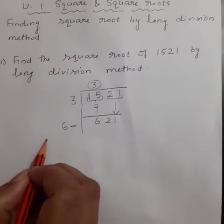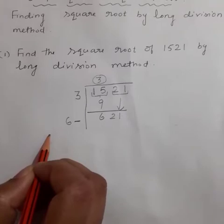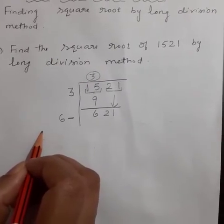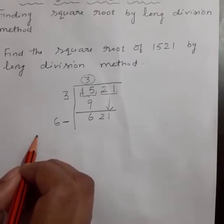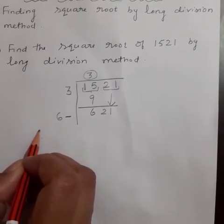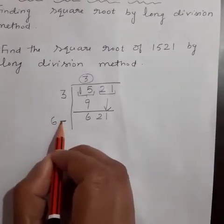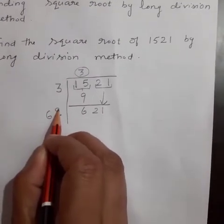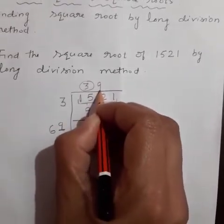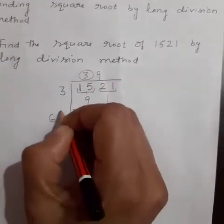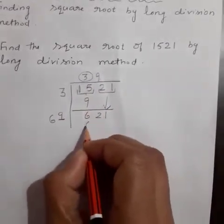Guess the largest possible digit to fill the blank, which also becomes a new digit in the quotient, such that when the new digit is multiplied by the new divisor, the product is either less than or equal to the dividend. Here our required digit is 9. Write 9 in the blank and also as the new quotient digit. Multiply the new divisor 69 by 9 — we get 621.